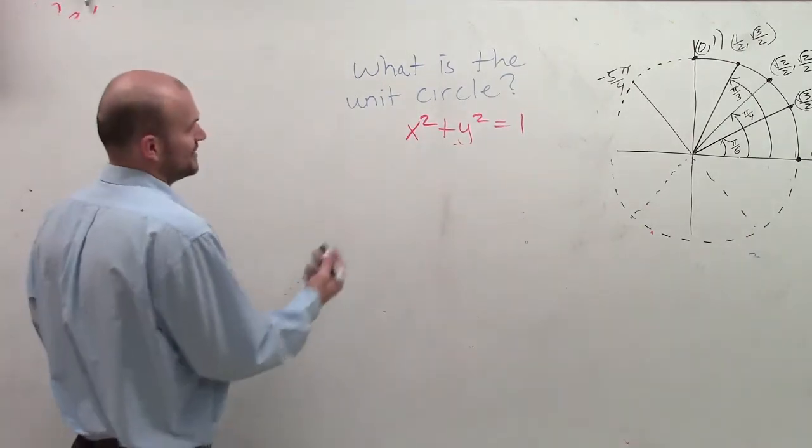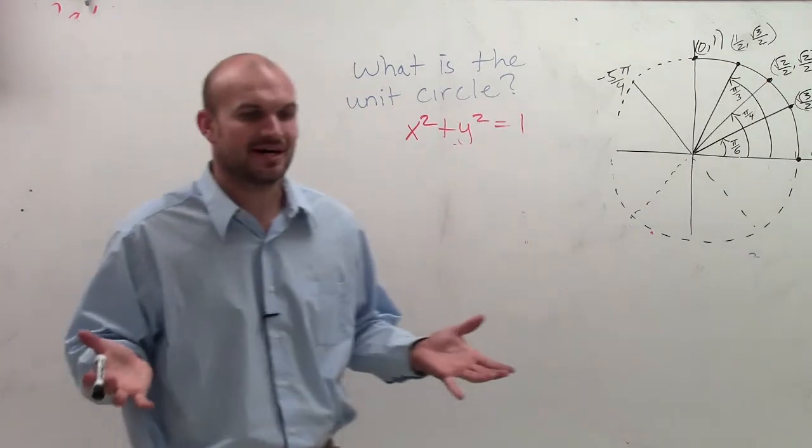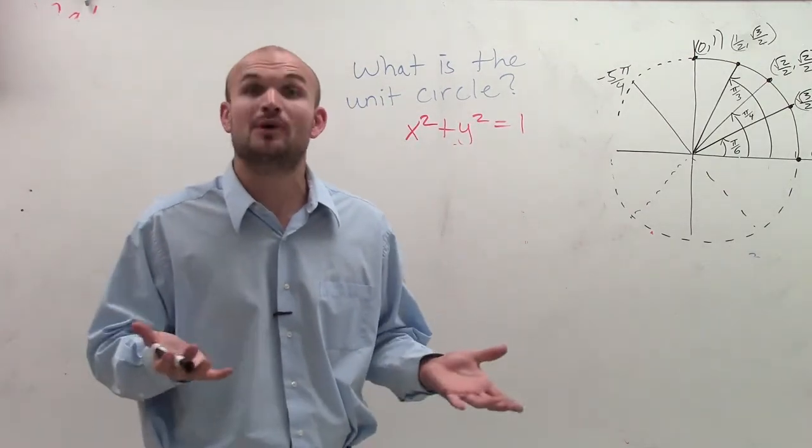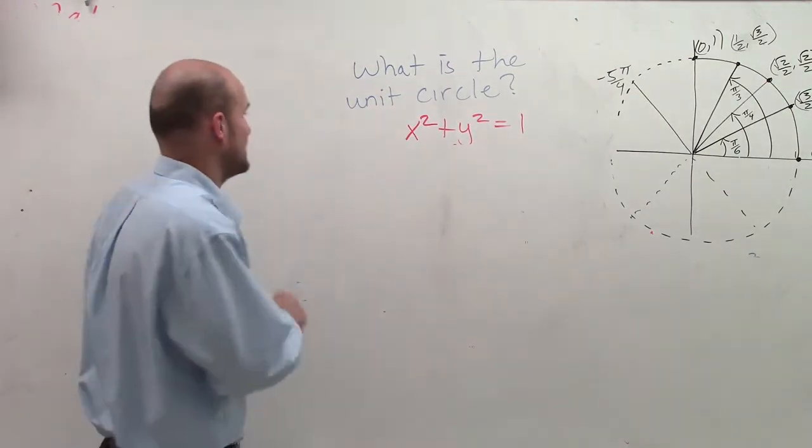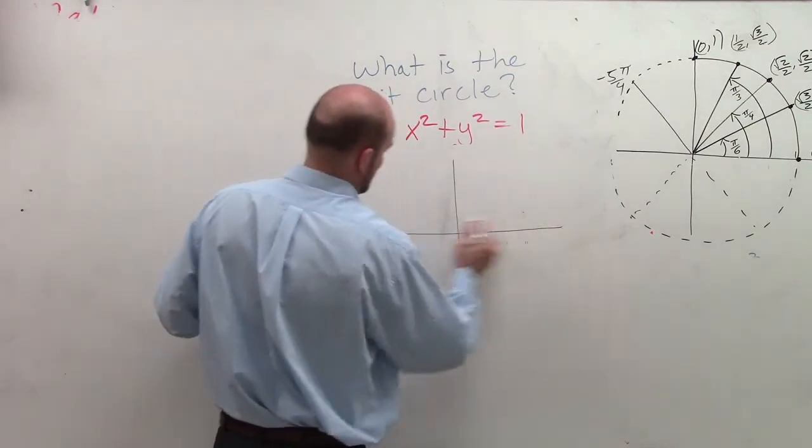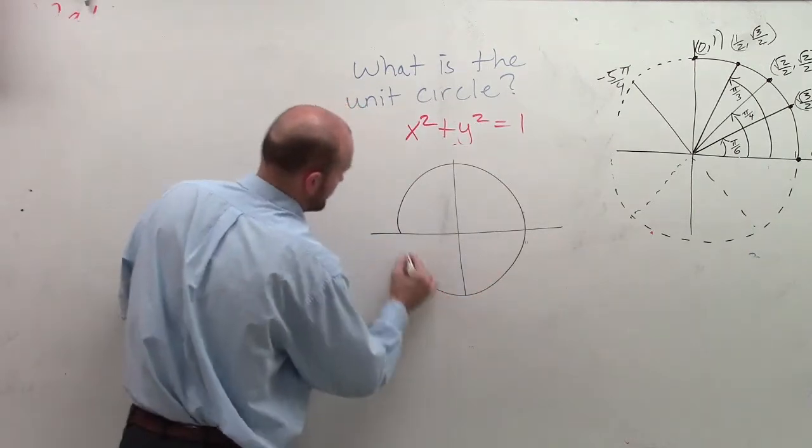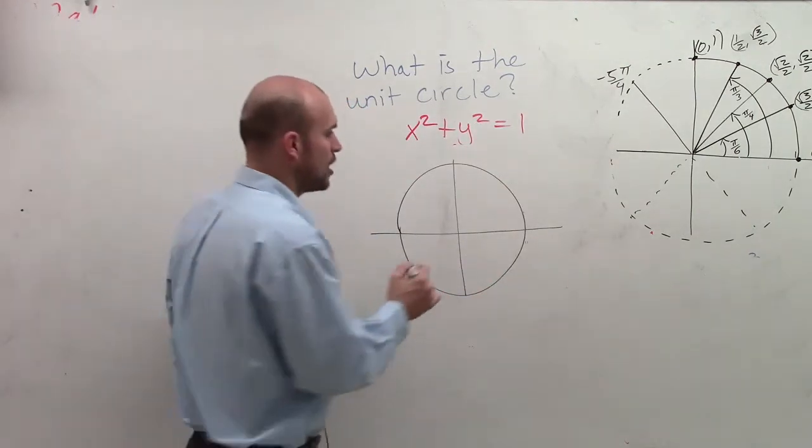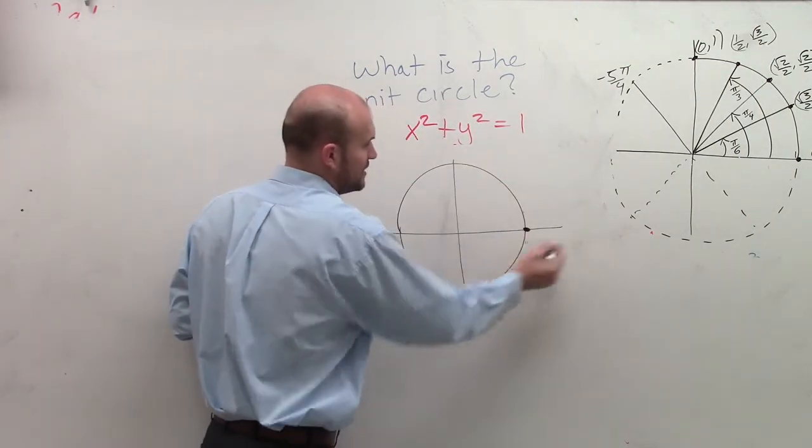So it's going to look like something. If you guys remember anything about the equation of a circle, you know that 1 is going to be your radius. So I'm just going to draw our unit circle. And it's going to look something like that. But remember, our radius is going to be out to 1.